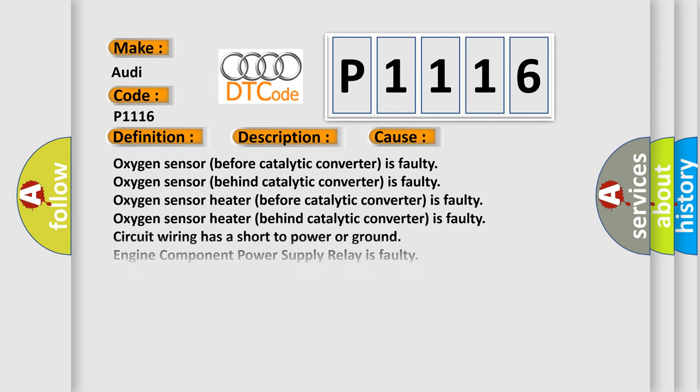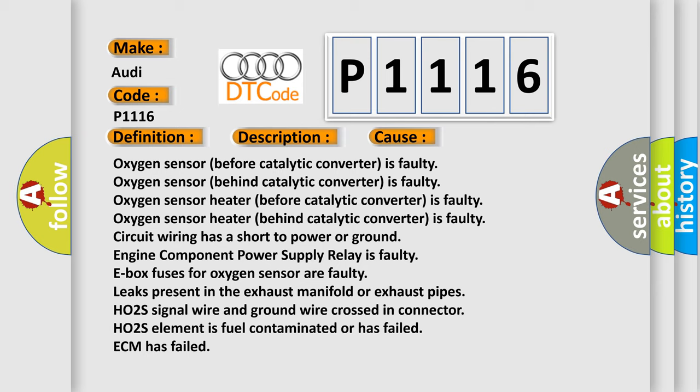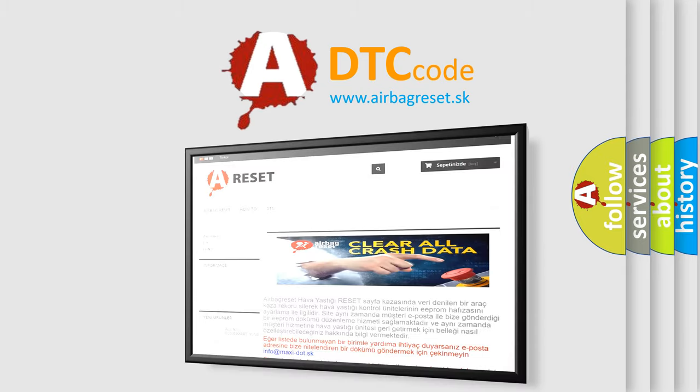This diagnostic error occurs most often in these cases: oxygen sensor before catalytic converter is faulty, oxygen sensor behind catalytic converter is faulty, oxygen sensor heater before catalytic converter is faulty, oxygen sensor heater behind catalytic converter is faulty, circuit wiring has a short to power or ground, engine component power supply relay is faulty. The airbagreset.sk website aims to provide information in 52 languages.